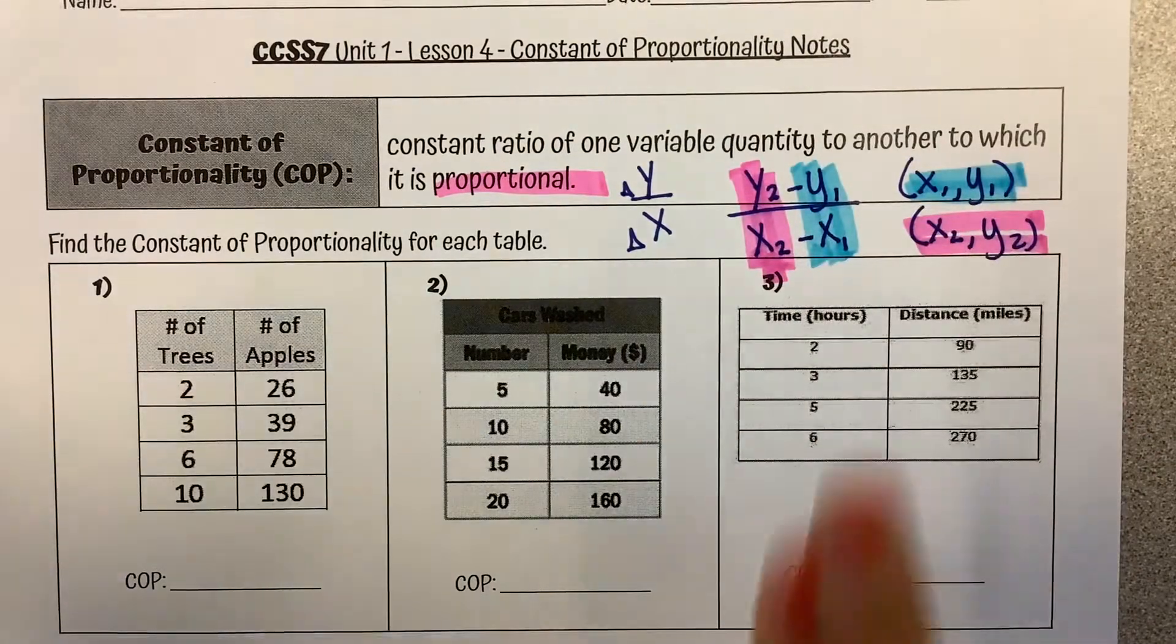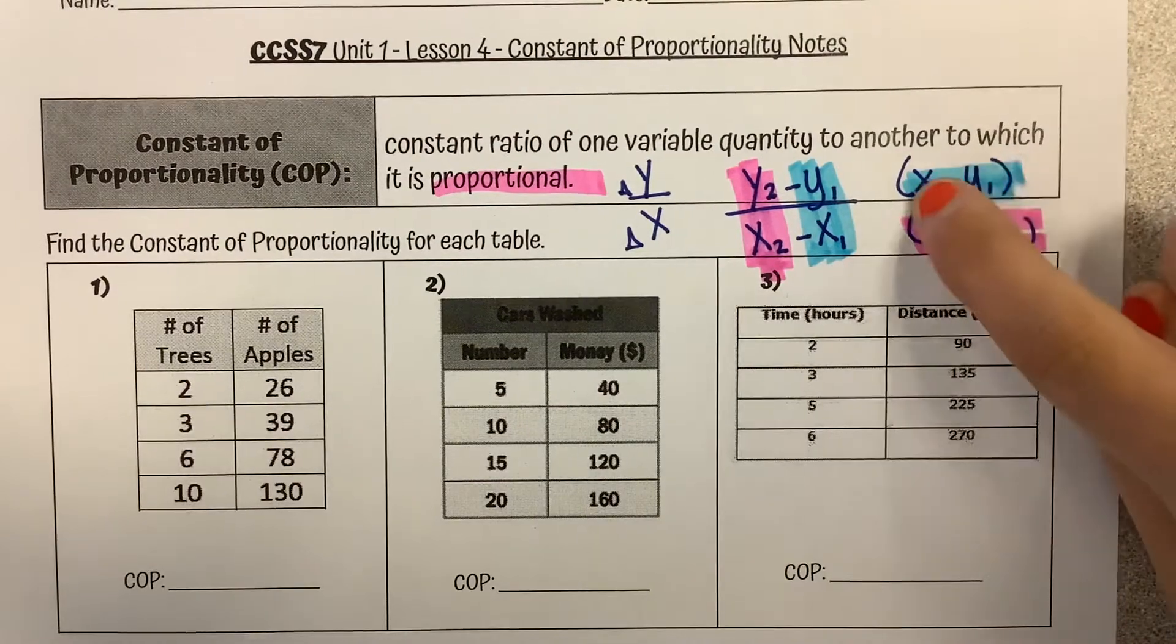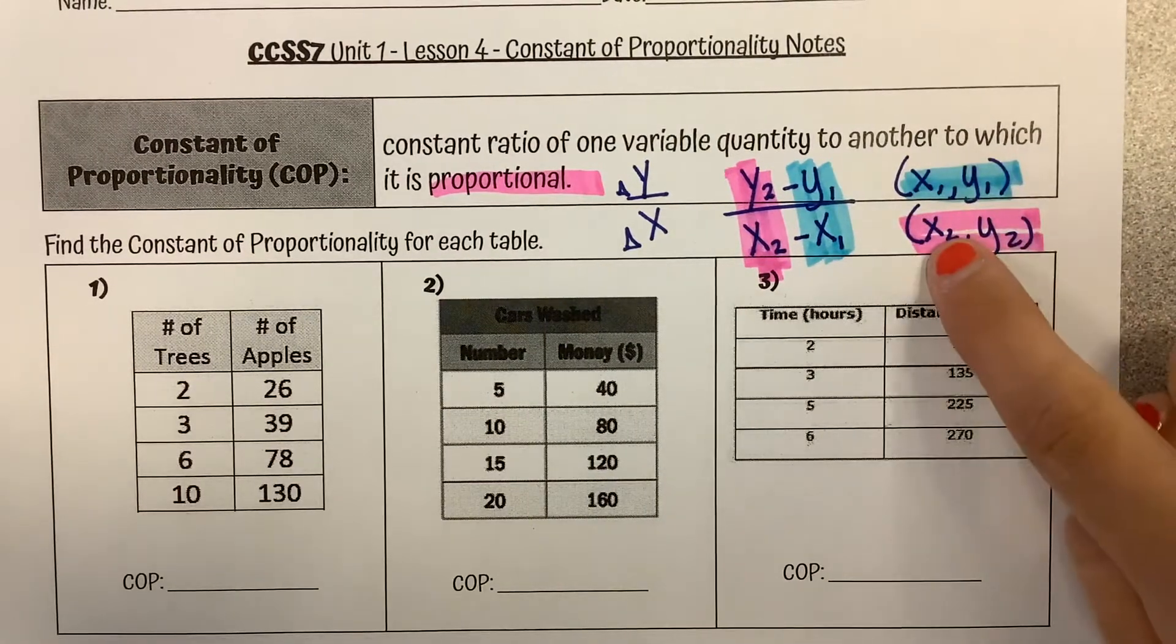And we just have to keep it in order this way. So I can flip around which ordered pair I do first. It just means if I start with this y, I have to start with that x. Or if I start with this y, I have to start with that x.